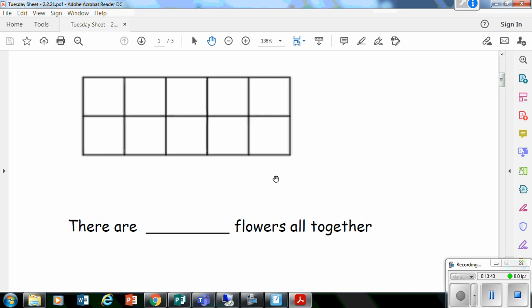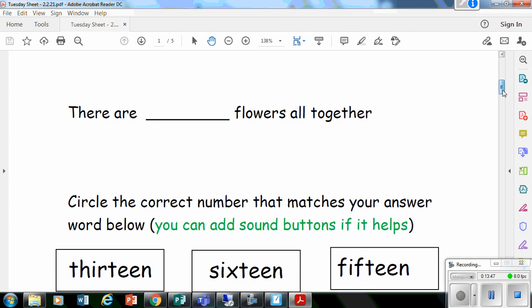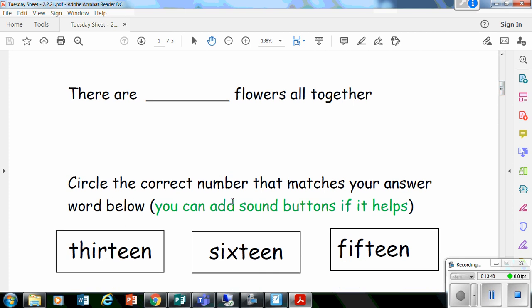There are so many flowers all together. So you're writing the word for the number in that blank space. Or if you would like to, you write the digit and then you are circling the correct number that matches your answer. So is it this one? You circle it if it's that one. You can circle it if it's that one. You can circle it if it's that one. Okay. And then you can add sound buttons as well if it helps you.